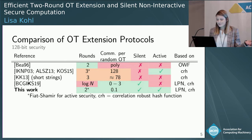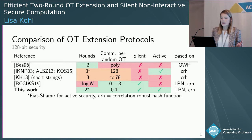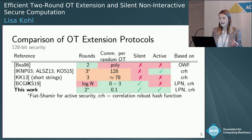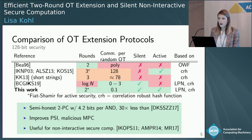What we got in this work is the best of all worlds: the first efficient two-round OT extension where the communication is only 0.1 bits per random OT — independent of the number of OTs we want to generate — with the silent feature. On top of that, we can also show how to make it actively secure, even in two rounds, if you're fine with random oracles.